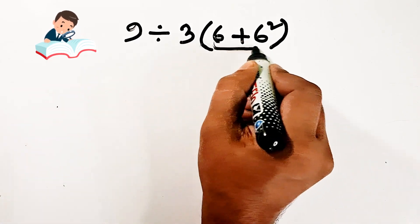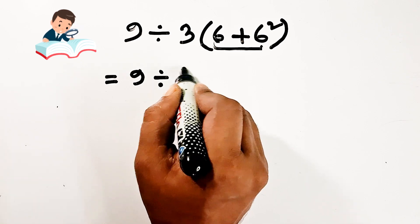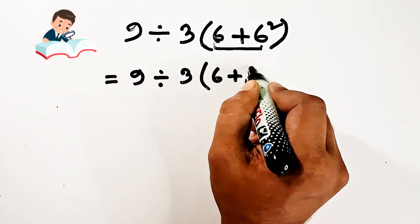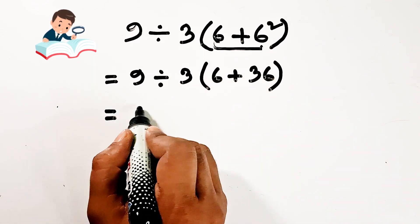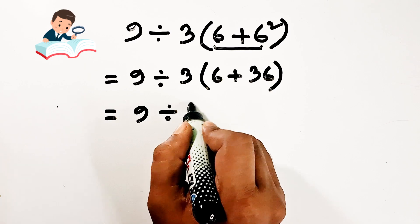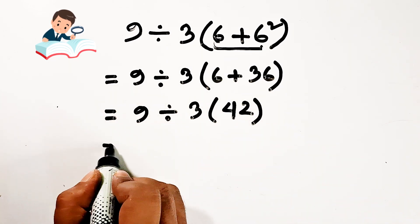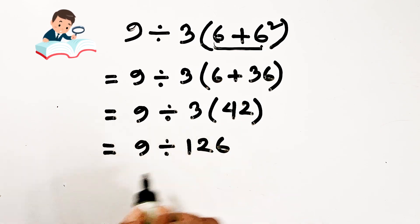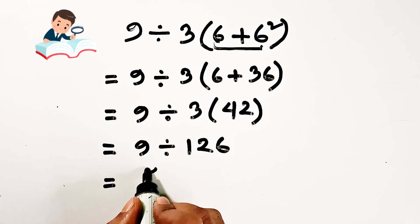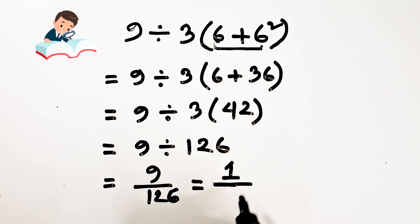Hello guys, we will do another simplification problem. First we will do inside the first bracket: 6 plus 6 square. 6 squared means 36, then 9 divided by 3, 6 plus 36 equals 42, then 9 divided by 3 into 42 equals 126. 9 divided by 126, then we can write it as 1 by 14.